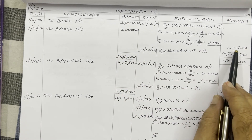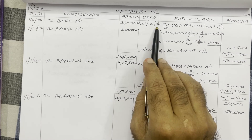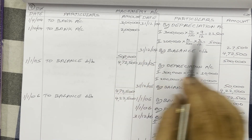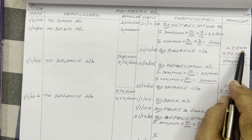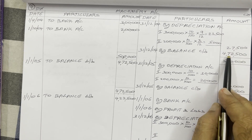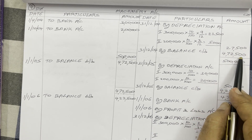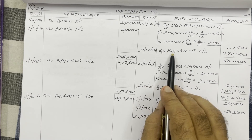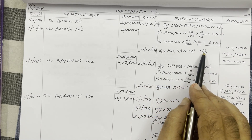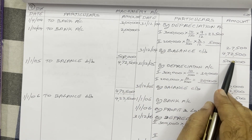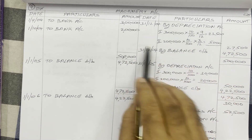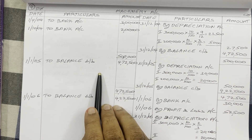Total debit is five lakh rupees. Subtracting credit of 27,500, the remaining balance is four lakh seventy-two thousand five hundred. Write that on the credit side as balance carried down. Both sides total to five lakh rupees, so the first year is completed.